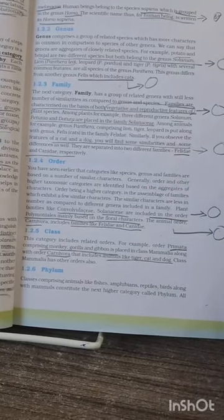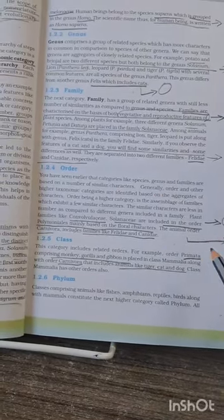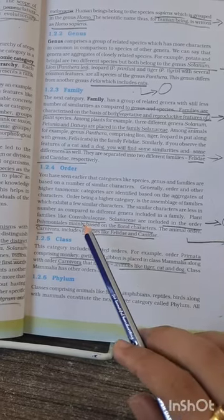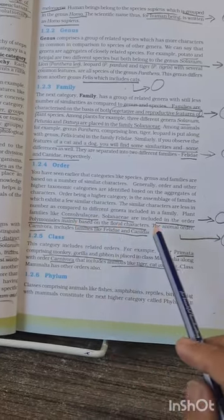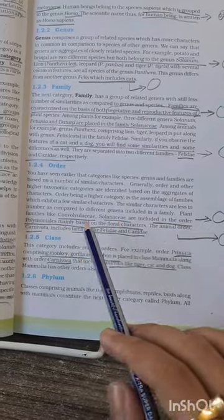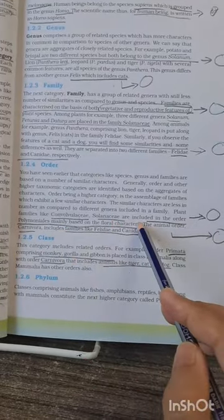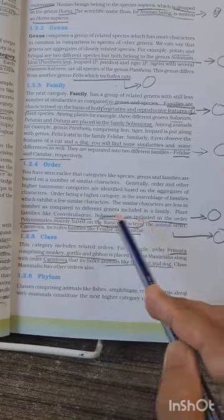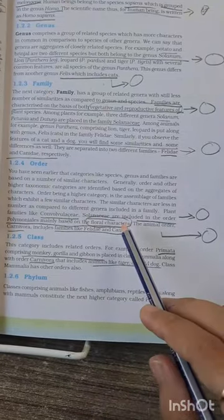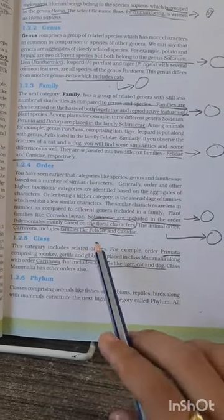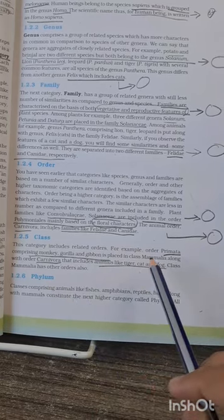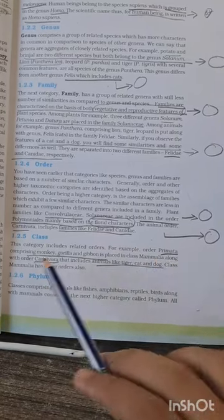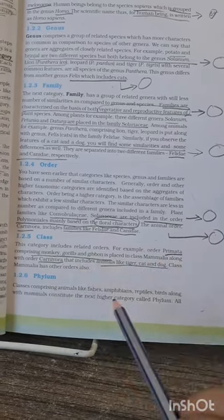In order, Convolvulasi and Solanasi includes which orders, Polymonials includes which, and the character which it has been based like floral characters. This has been asked many times. And from class, Primata includes which of these animals.